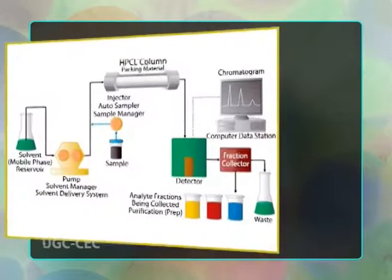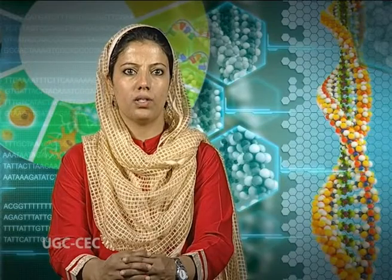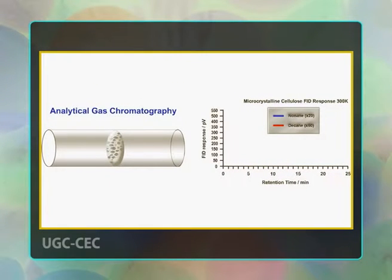Chromatography may be preparative or analytical. The purpose of preparative chromatography is to separate the components of a mixture for more advanced use and is thus a form of purification. Analytical chromatography is done normally with smaller amounts of material and is for measuring the relative proportions of analytes in a mixture. The two are not mutually exclusive.